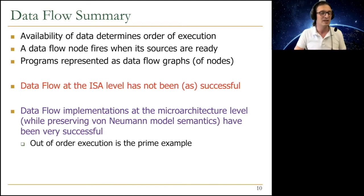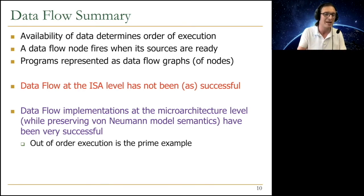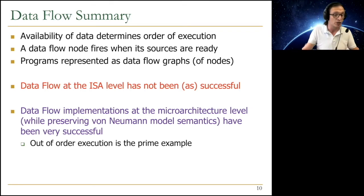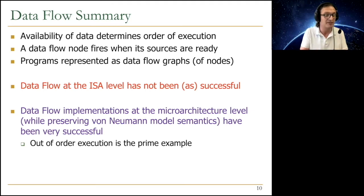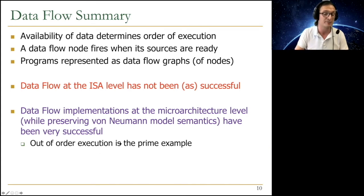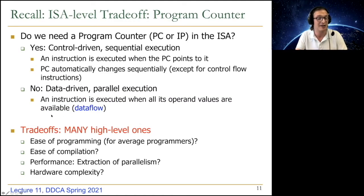This has been extremely successful commercially because nobody needs to change software — you just need to change the microarchitecture. Out-of-order execution is the prime example of this. People have also tried to make out-of-order execution more efficient: how do you make tag matching logic more efficient, renaming more efficient, minimize storage of values, make load-store handling logic more efficient? There's been a lot of research and engineering over the last 30-35 years since it was first implemented. Out-of-order execution was first commercially successful with the Intel Pentium Pro, and essentially all high-performance machines implement it today.